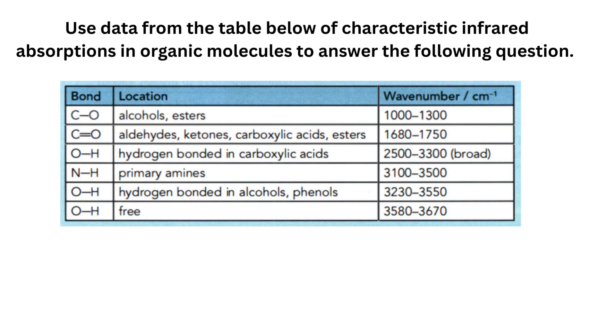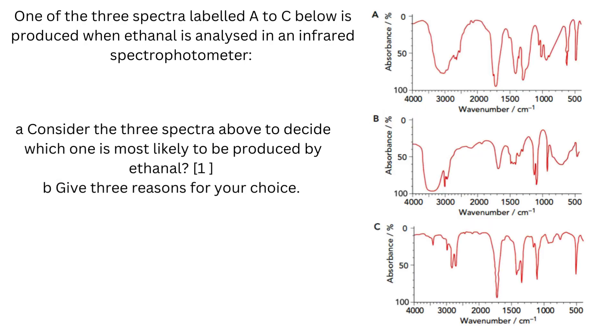Use the data from the table below of characteristic infrared absorptions in organic molecules to answer the following questions. One of the three spectra labeled A to C below is produced when ethanol is analyzed in an infrared spectrophotometer.